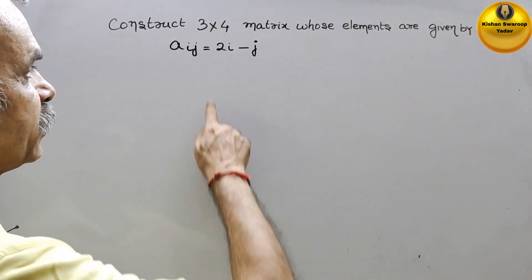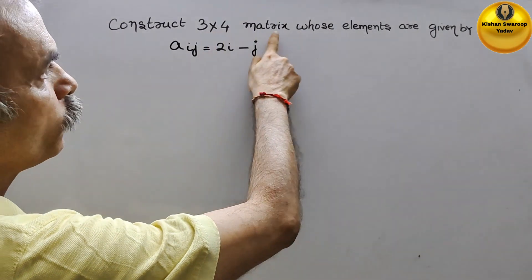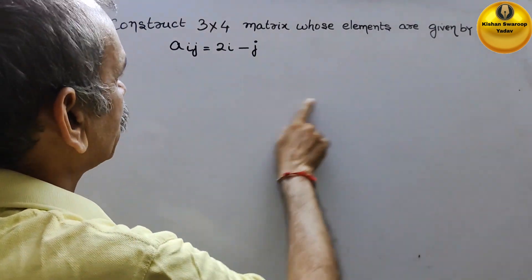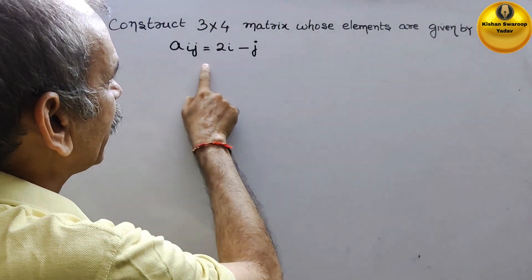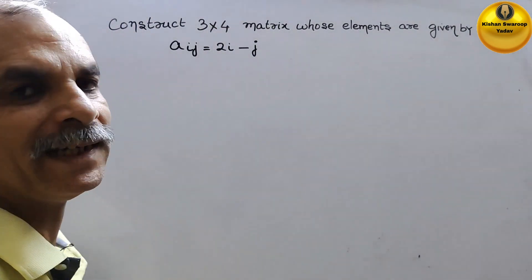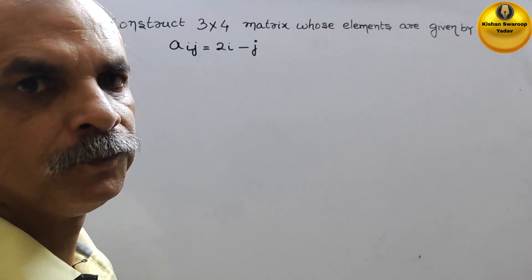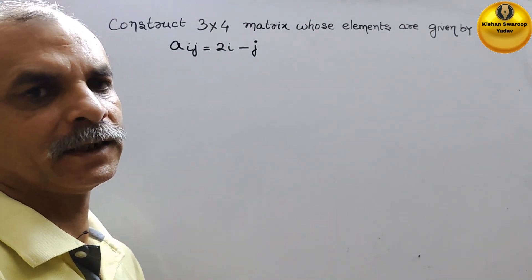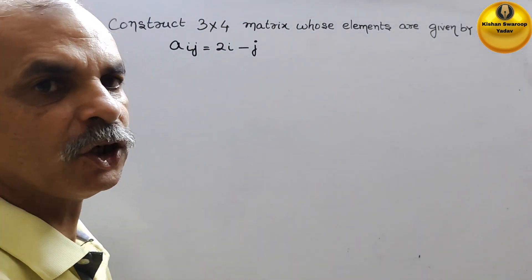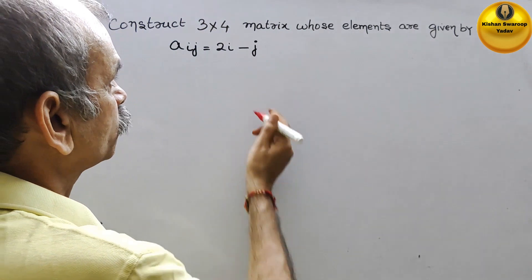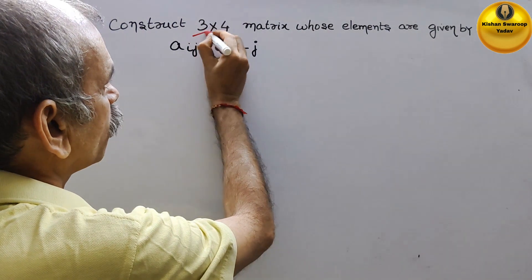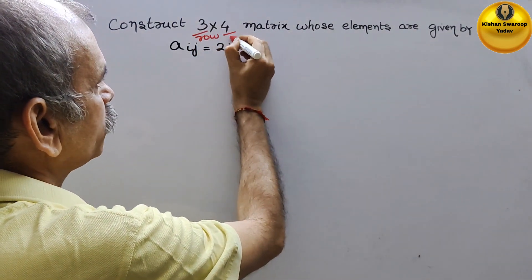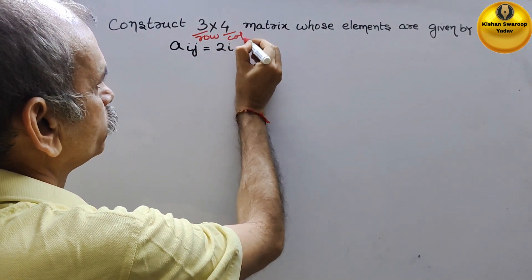The question is: construct a 3 into 4 matrix whose elements are given by Aij equals 2i minus j. So first we will construct it. Here 3 is your row and 4 is your column.